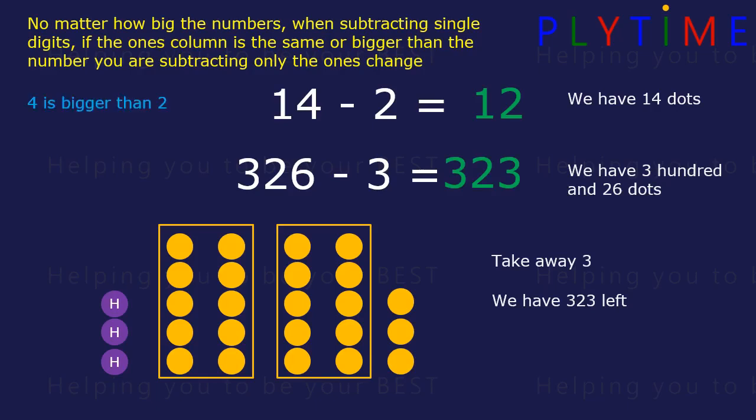In the first one, four is bigger than two. And in the second one, six in the ones is bigger than three. So only the ones change. The tens and the hundreds stay the same.